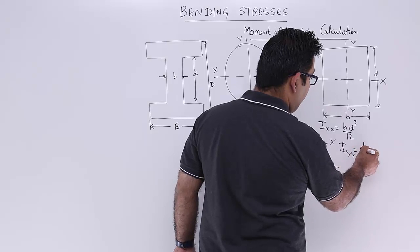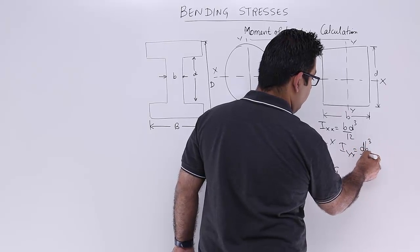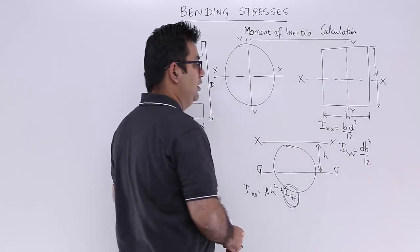Iyy will be equal to d into b cube upon 12.